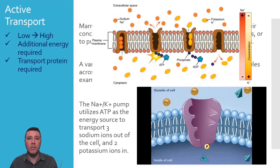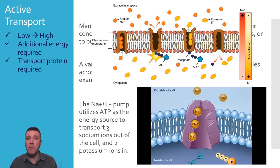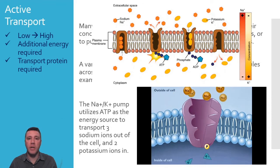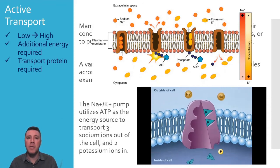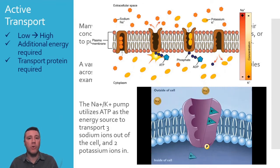The result is the establishment and maintenance of a concentration gradient of both sodium and potassium ions. Sodium is present in a greater concentration outside the cell and potassium is in a greater concentration inside the cell. So now, let's take a look at why those established concentration gradients are so important.